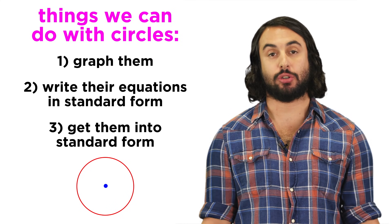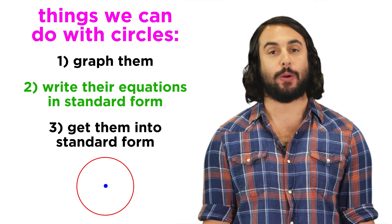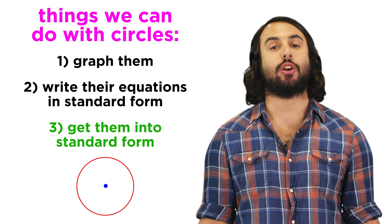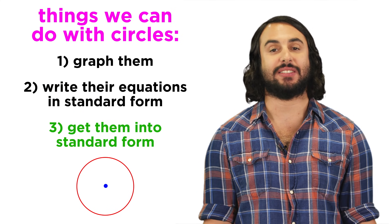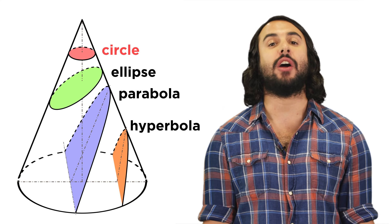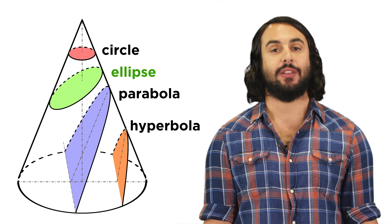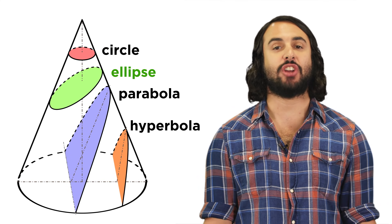So now we know how to represent circles graphically, how to write their equations in standard form, and how to manipulate an equation in order to get it into standard form, so that we can graph it. Circles are relatively simple compared to the other conic sections, so let's move forward and check out a trickier one, the ellipse. But first, let's check comprehension.